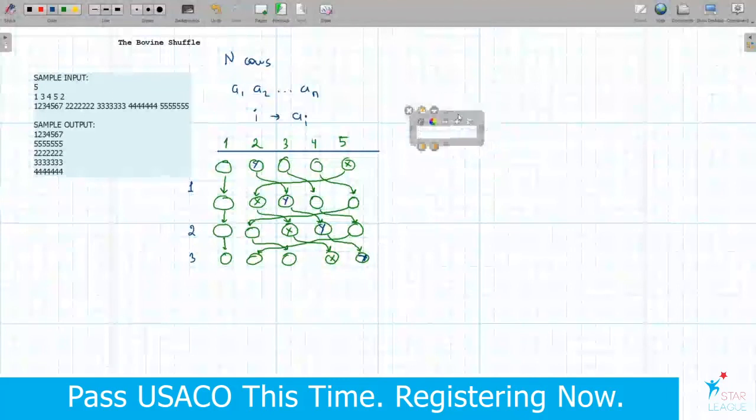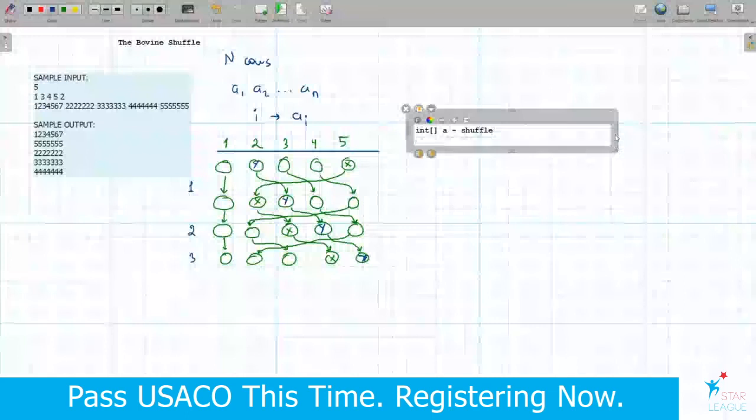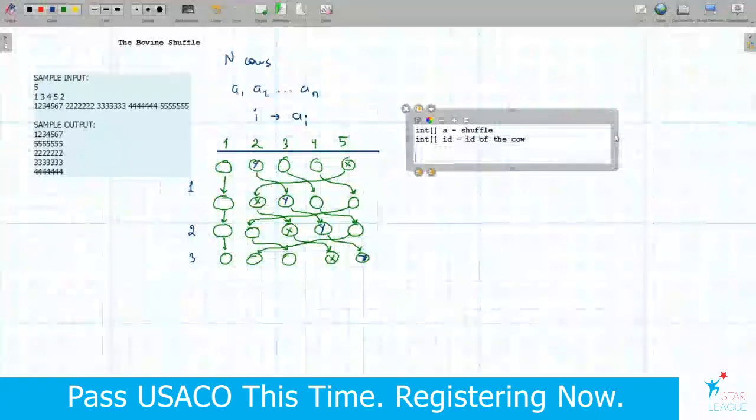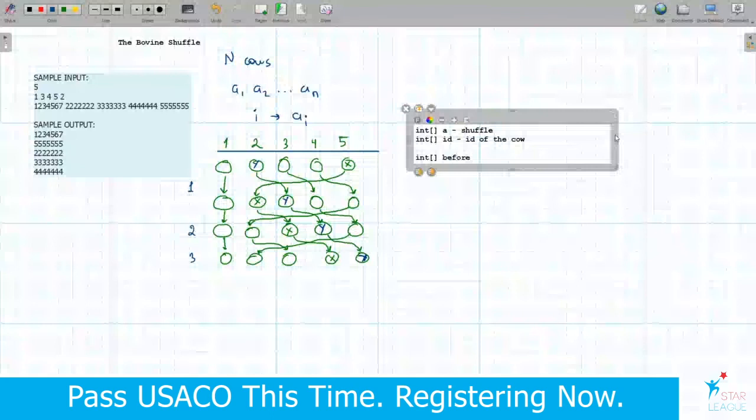So, let's try to write some code. We have an array of integers a. This is how we shuffle the cows. And also, we have the integer identificators of the cows, let's call it id. And we did three shuffles here, but let's try to go backwards in one shuffle. And if we can do that, we will only have to repeat this three times to get to the beginning, okay?